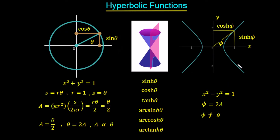Now we'll look at the hyperbolic functions. Historically, the hyperbolic functions were generated by taking a conic section and cutting it vertically, generating two curves — these are hyperbolas, given by the equation x squared minus y squared equals 1. Compare this with the unit circle, given by x squared plus y squared equals 1. They look very similar, with just the difference of a minus versus a plus.